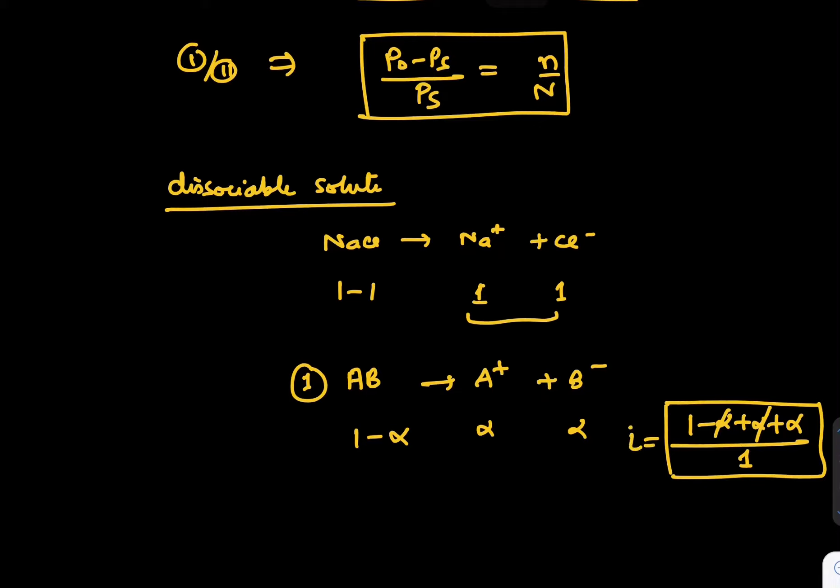What is Van't Hoff factor for the previous question? 1 minus 1 plus 1 plus 1 upon 1, which is technically 2. One particle is becoming 2. In AB case, one particle is becoming 1 plus alpha. If alpha is 100%, then I will be equal to 2.